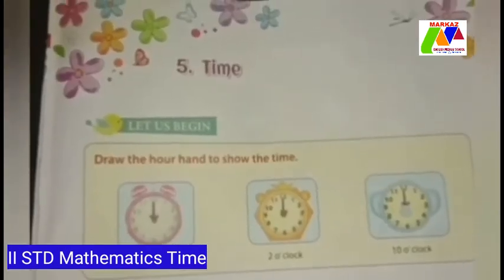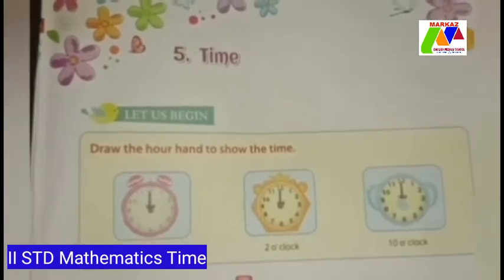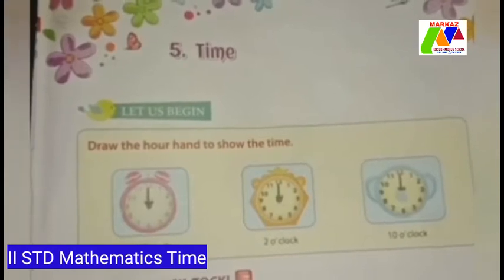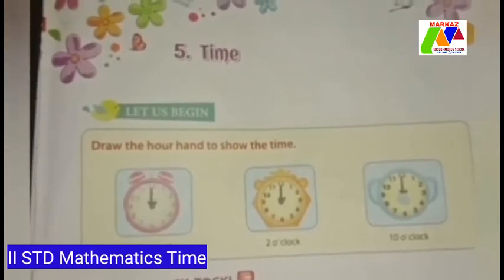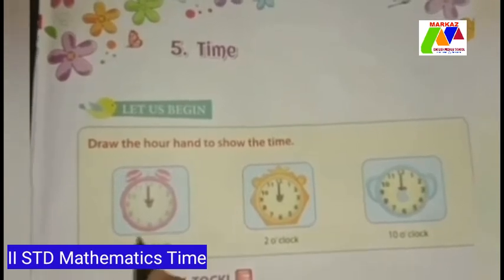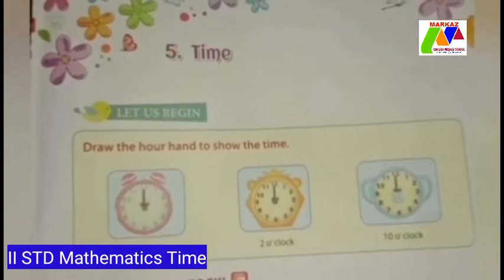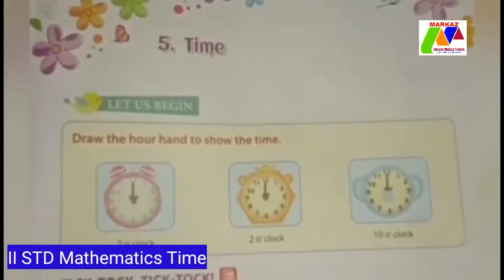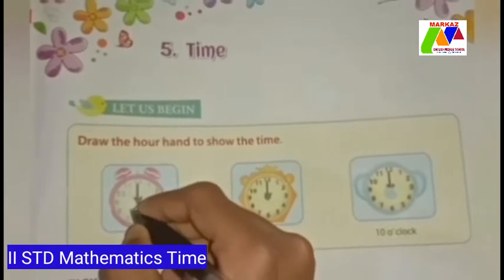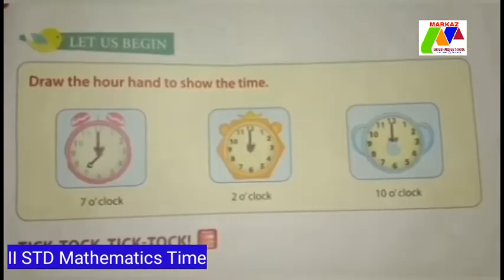Now let's take your textbook, page number 99. Draw the hour hand to show the time. In this clock, the minute hand is on 12. To show the time 7, we draw an hour hand on 7. Now the clock shows 7 o'clock.